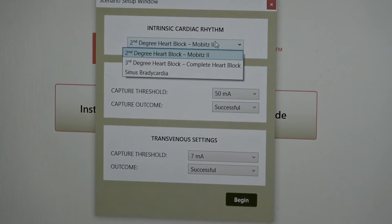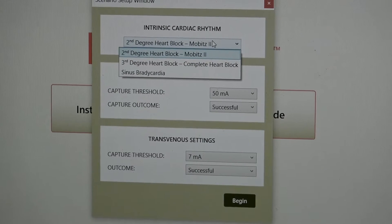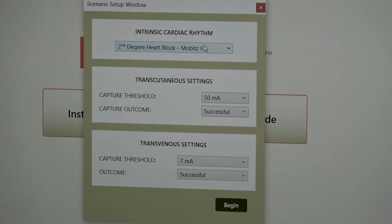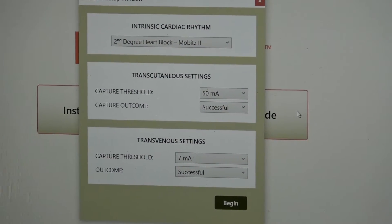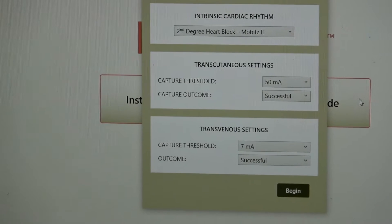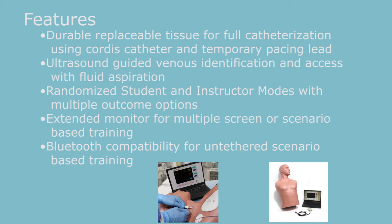It has a pacing defibrillator panel and we can choose some parameters for that as well. You can also set your transvenous settings, so we can determine what we want the successful capture threshold to be on your generator. The instructor can choose what they want the output to be for a student to have successful capture — so for this demonstration we'll choose five.